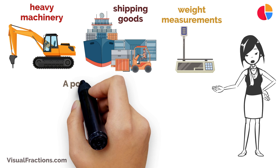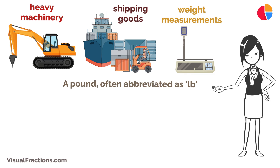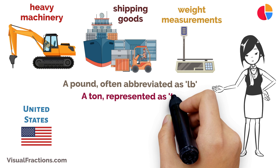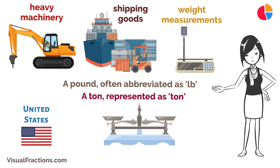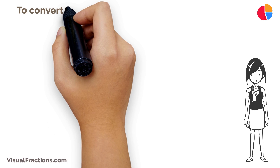Let's start with the basics. A pound, often abbreviated as lb, is a unit of weight commonly used in the United States and a few other countries. A ton, represented as 'ton', is a larger unit of weight often used for heavy objects and industrial purposes. The key fact: one ton is equal to two thousand pounds.